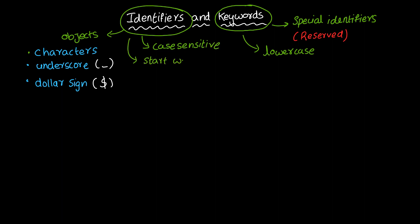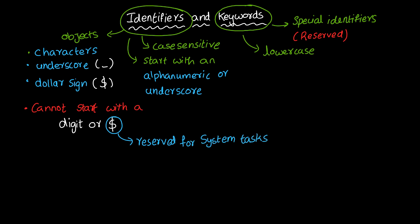Identifiers are case-sensitive. Identifiers start with an alphabetic character or an underscore. They cannot start with a digit or a dollar sign. The dollar sign as the first character is reserved for system tasks.